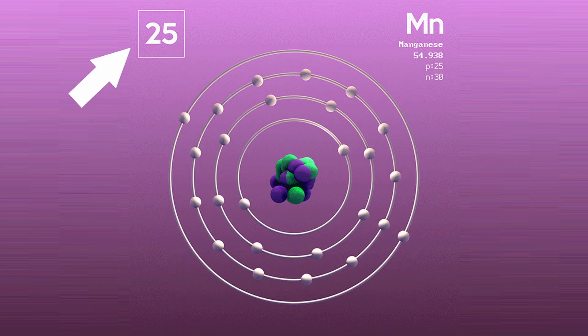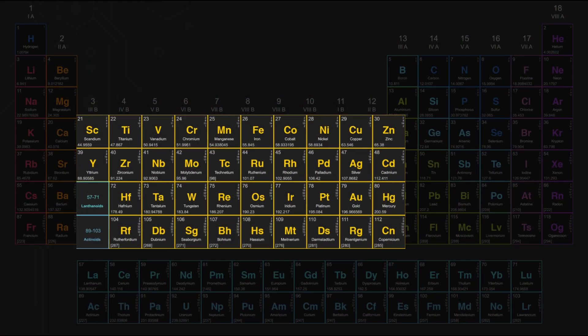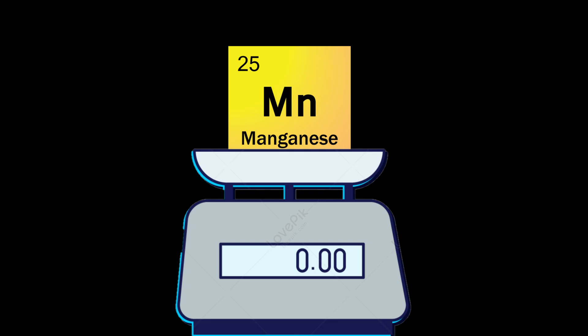Manganese, 25th element of the periodic table and classified as a transition metal with an atomic weight of about 55.